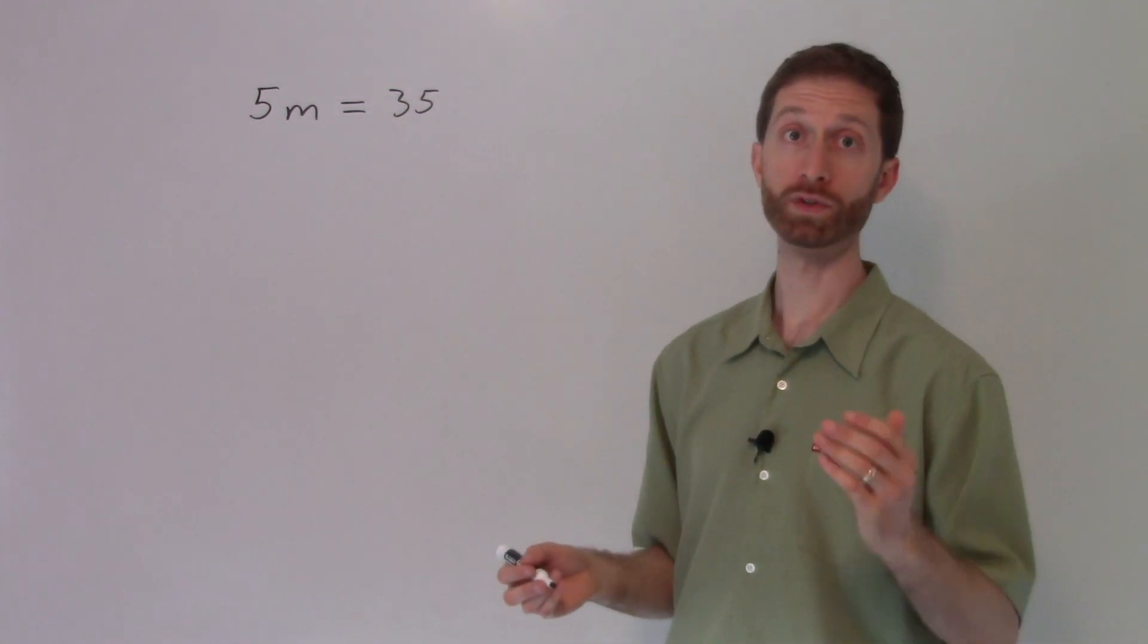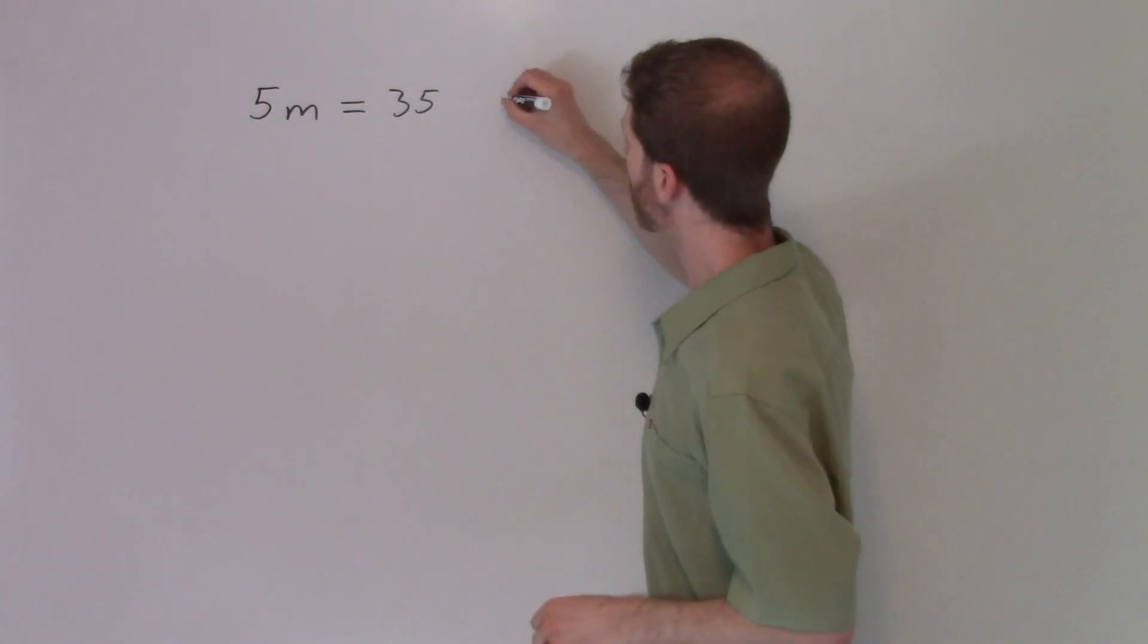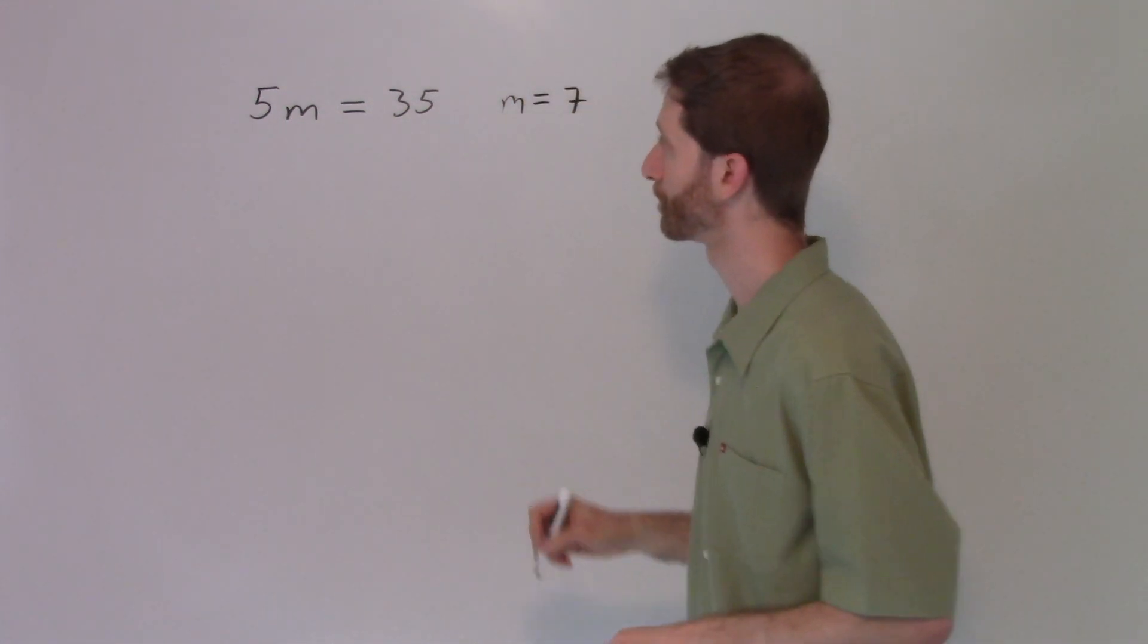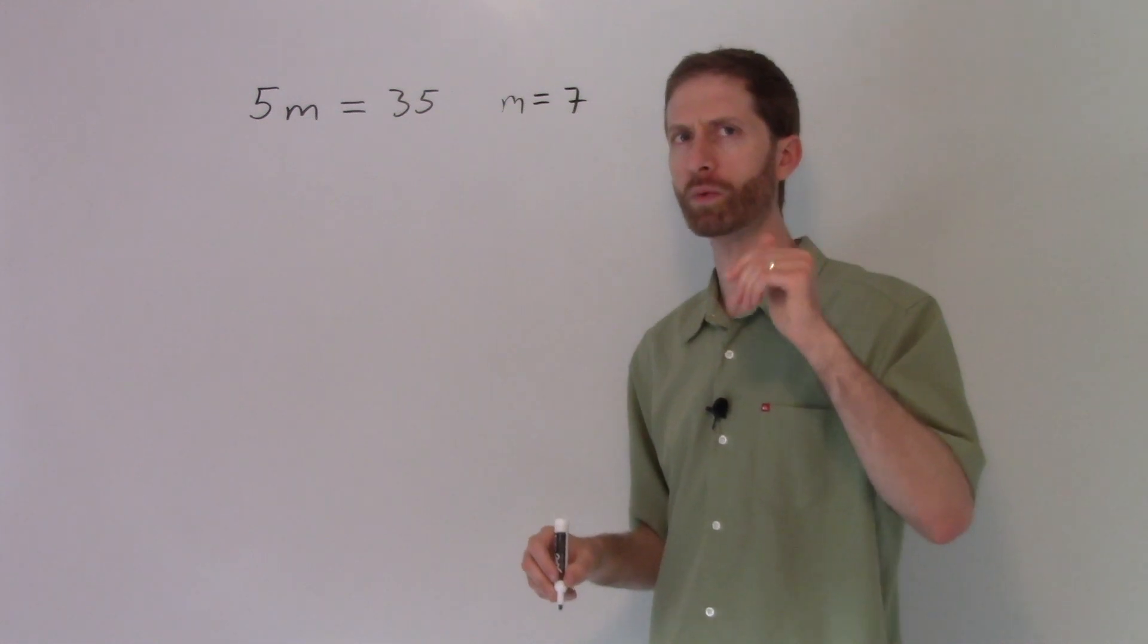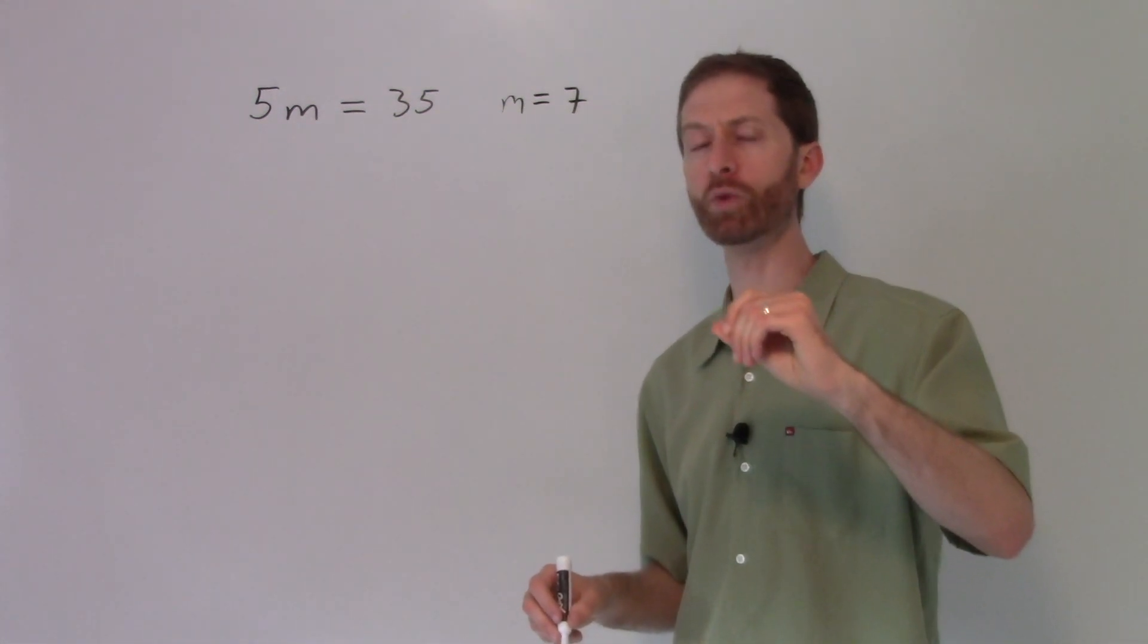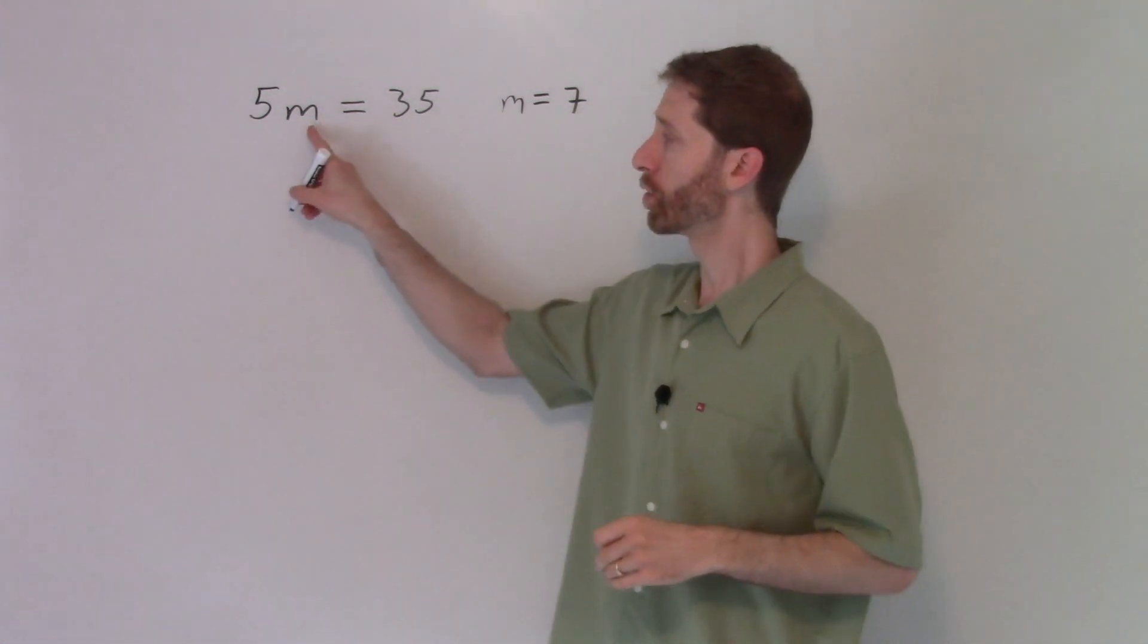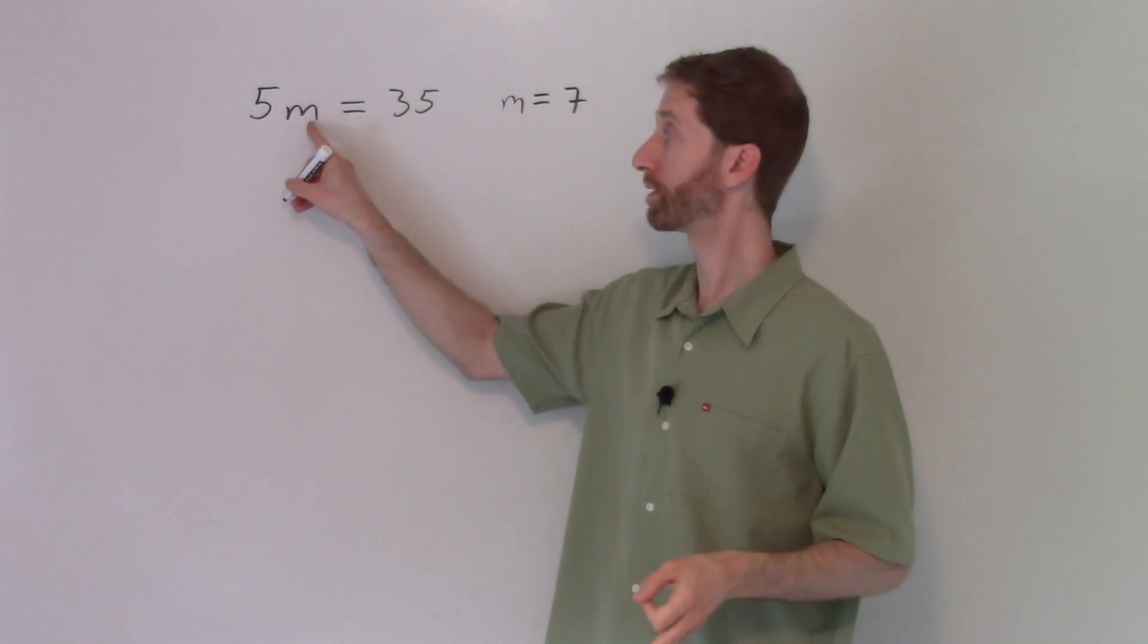Seven times five equals 35. So mental math wise, I already know that m equals seven is my solution. Now, if you listen to what we just stated, it makes sense that we need to divide to get m alone to solve for it. Reason being is we said what number, this guy, times five gives me 35.